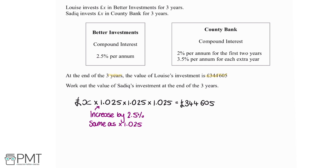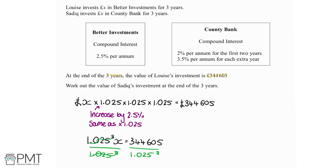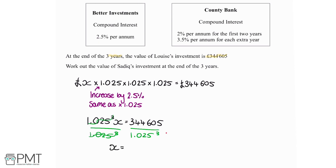Tidying this up, we've got 1.025 multiplied by itself, multiplied by itself — a nicer way to write that is 1.025 to the power of 3. So 1.025³ multiplied by x equals 344,605. Now we can solve this to work out the value of x. Dividing both sides by 1.025³, those cancel, leaving x by itself on the left-hand side. Putting the right-hand side into the calculator, we get an answer of £320,000.